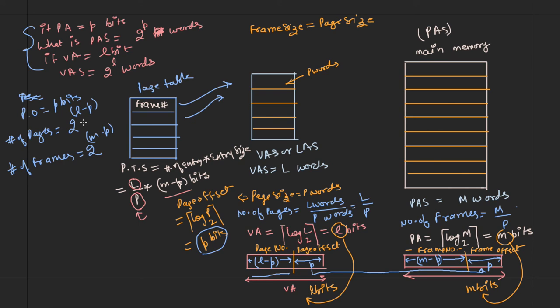You can use these values to solve problems related to paging, but I still prefer that you don't memorize them — try to derive them. Let us now take a few more examples of paging. I'll take one example of each type, make a table, and by solving that complete table you will be able to solve every question related to paging.